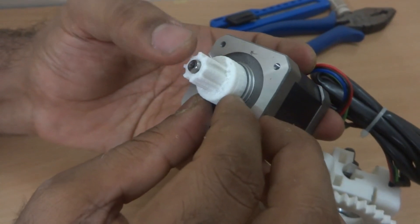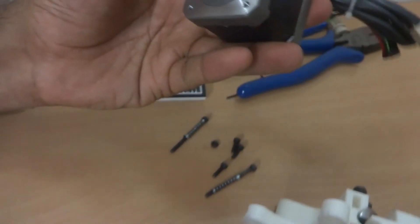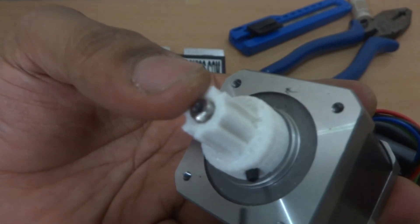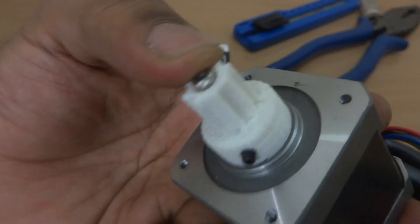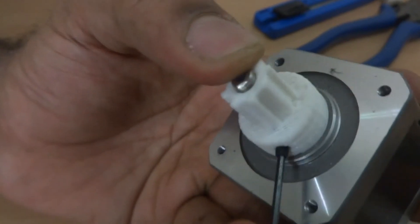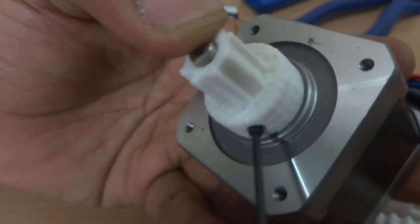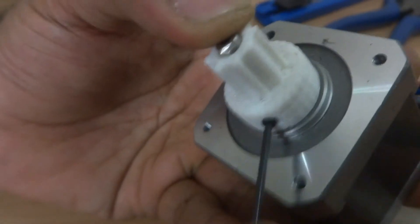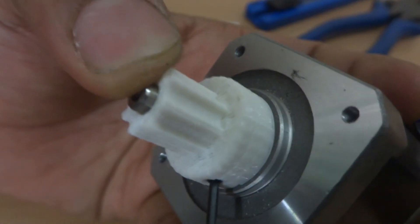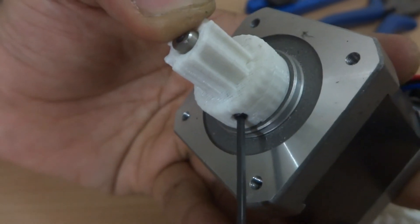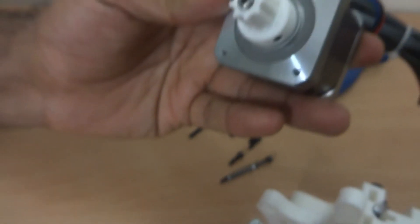Now you can align the flat portion of the shaft with the M3 grub screw which is already installed into this gear. So you simply tighten it a little bit. Don't tighten it too much.